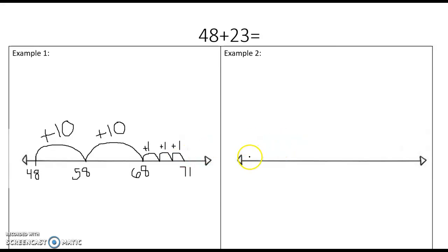Another way, we'll still start with 48. So the first way, we broke up our tens place into tens. This way, we're going to jump the whole tens place all at once. So we're going to add two tens all at once. Two tens is 20. So 48, we're going to jump 20.